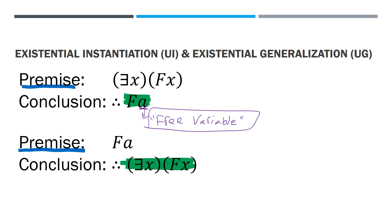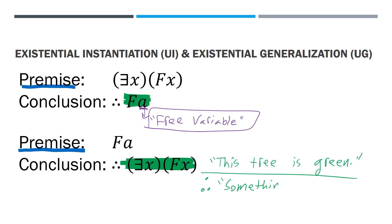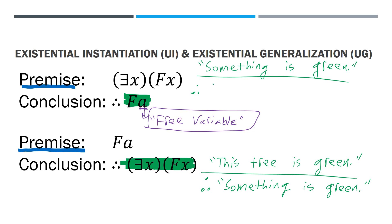For example, let's consider the argument: this tree is green, and then we conclude that therefore something is green. This would be an existential generalization. We've added a quantifier — something, or for some — there exists some x such that x is green. Whereas with instantiation, we might have: something is green. Therefore, we'll say a is green, and a is a free variable. We don't know exactly what it is necessarily. We just know there's something out there that is green.